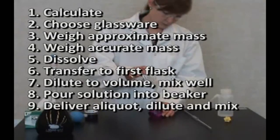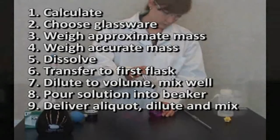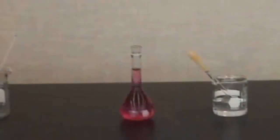Take aliquot into pipette. Add to second flask, dilute to volume, invert, and mix. Now you have your 10 part per million manganese solution.